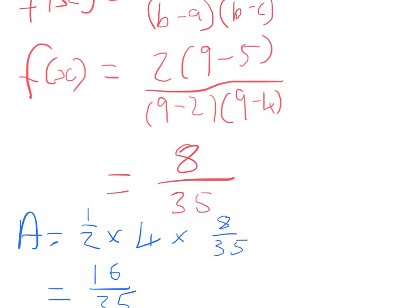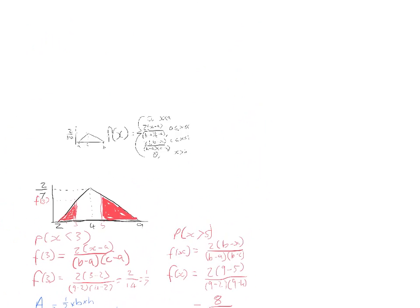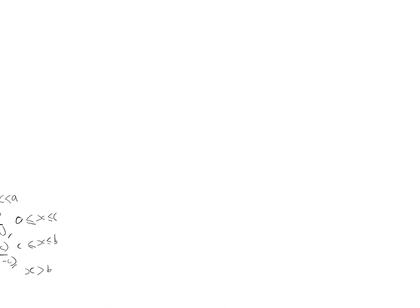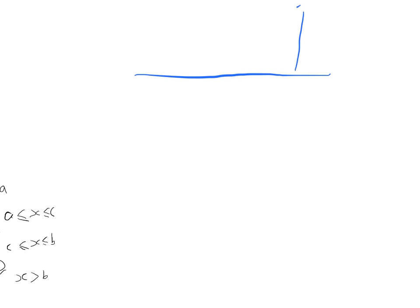The next example: rather than a triangle with a peak in the middle, we have one where b and c are the same — the distribution increases until it reaches a certain point, then it's no longer possible. Here our a is 4 and b and c are both 10. We want to find the probability that X is more than 7.